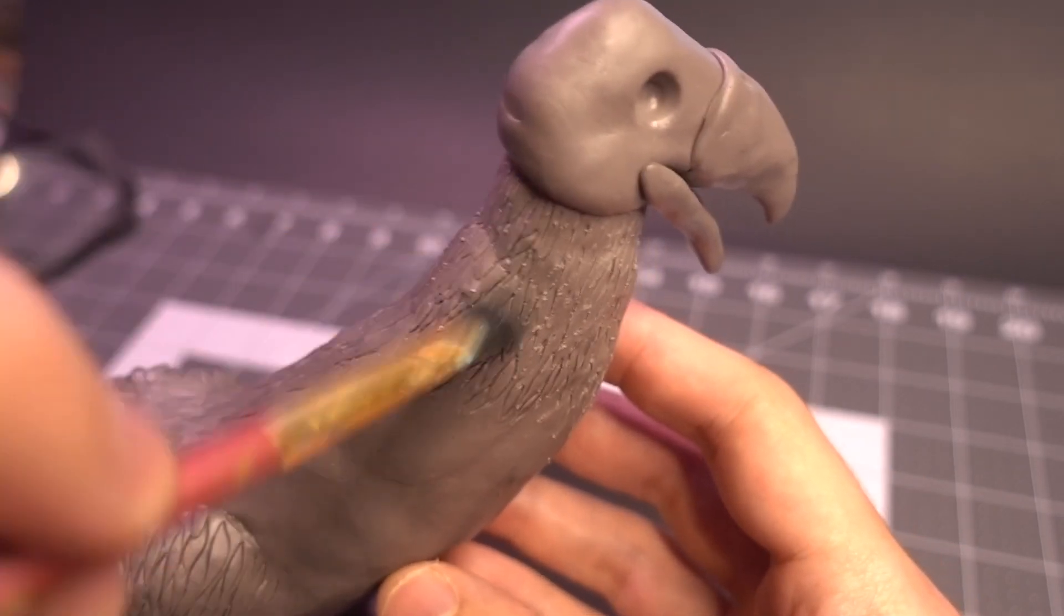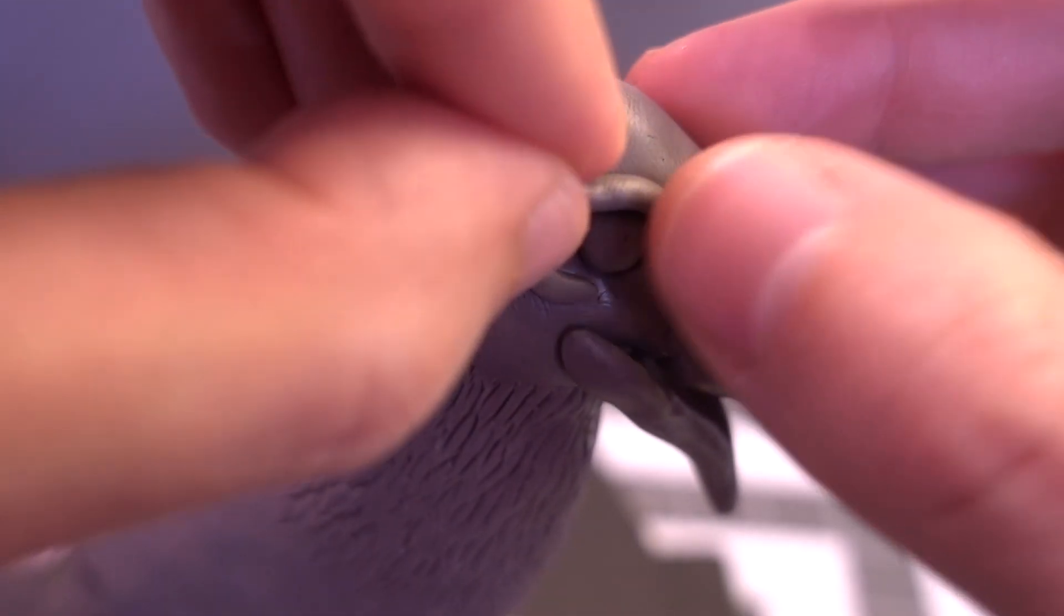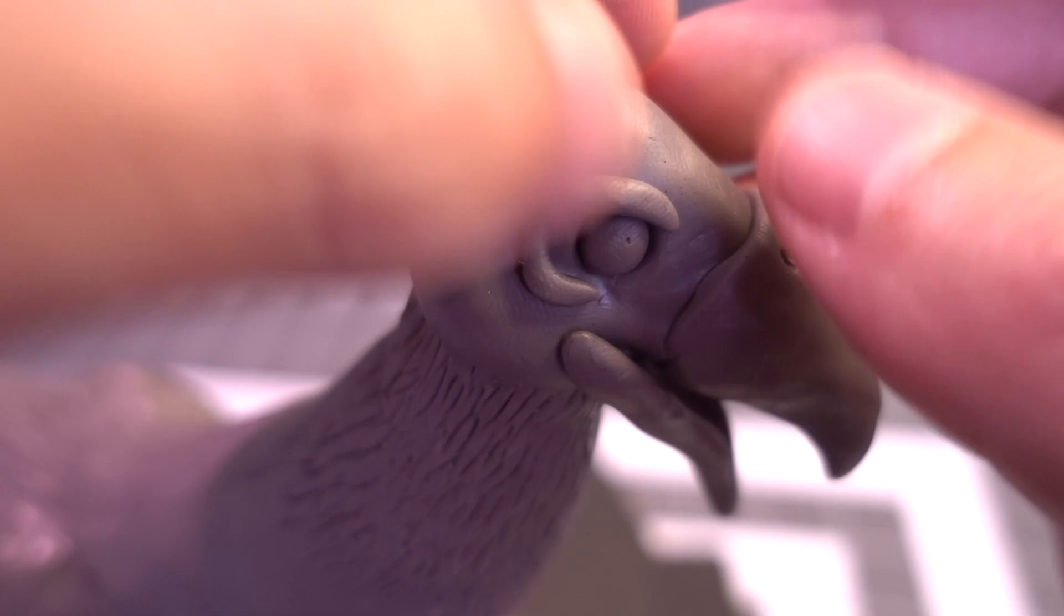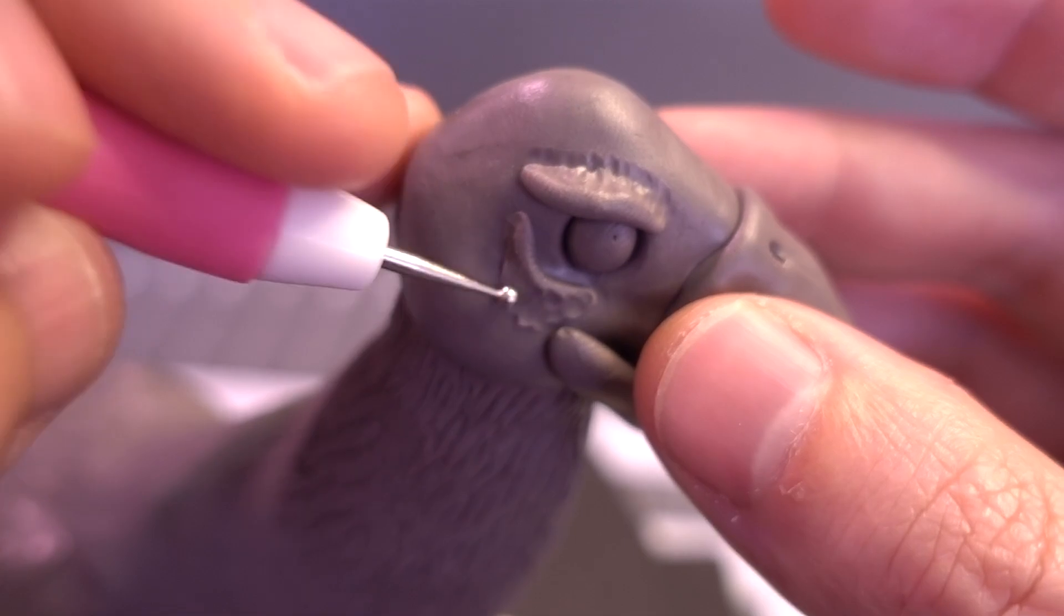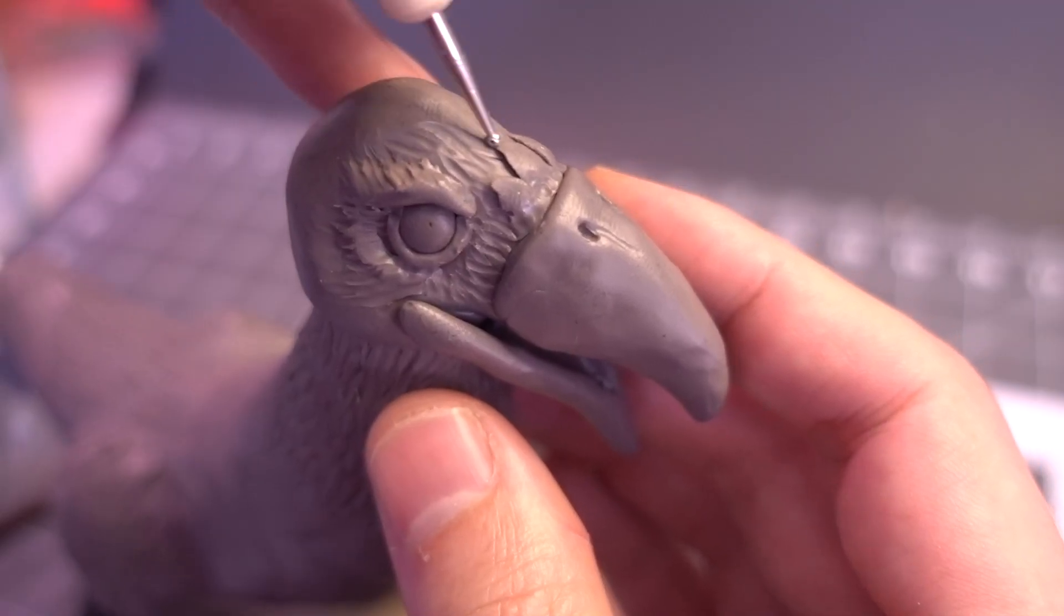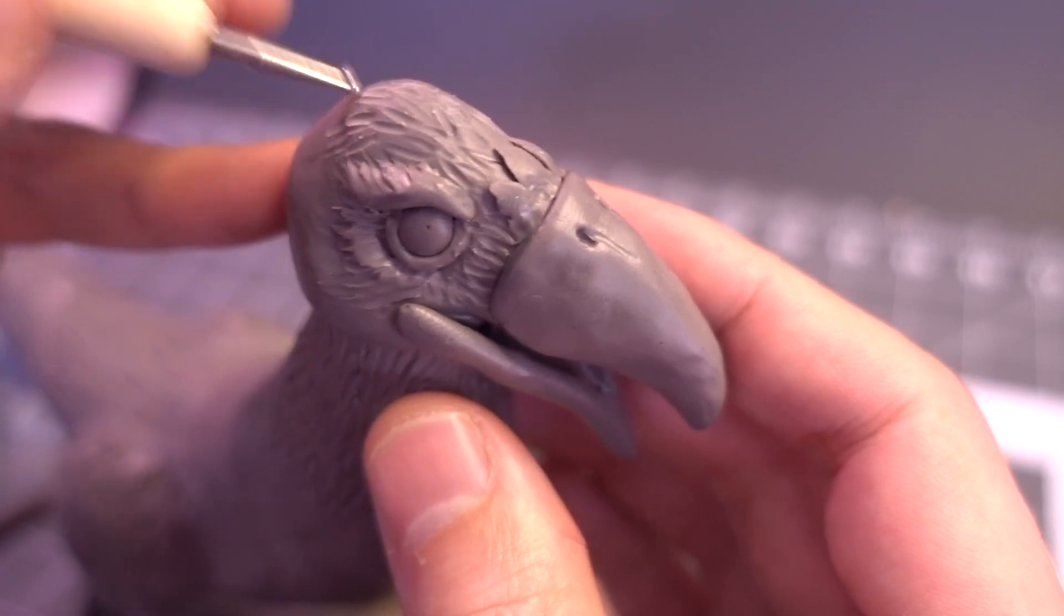Now onto detailing the head, and I'm using the same method as before, adding bits of clay here and there to get the general form I'm after, then blending it all together. I also realized that using this ball tip stylus created a pretty nice feather texture for a smaller scale, so I went with it.